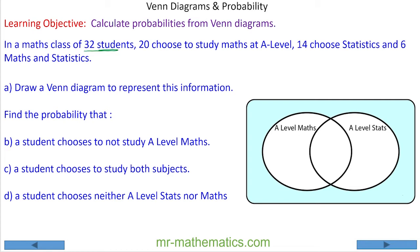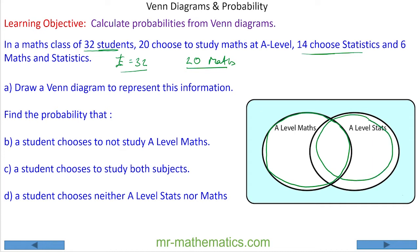We know our universal total set, which we call epsilon, has 32 students. 20 of them chose maths, so within this oval we have 20 people. 14 chose stats, so in this oval we have 14. And 6 chose maths and stats — this is where they overlap. This is called the intersection, and that's the key word for today's lesson. It is denoted with the intersection symbol.